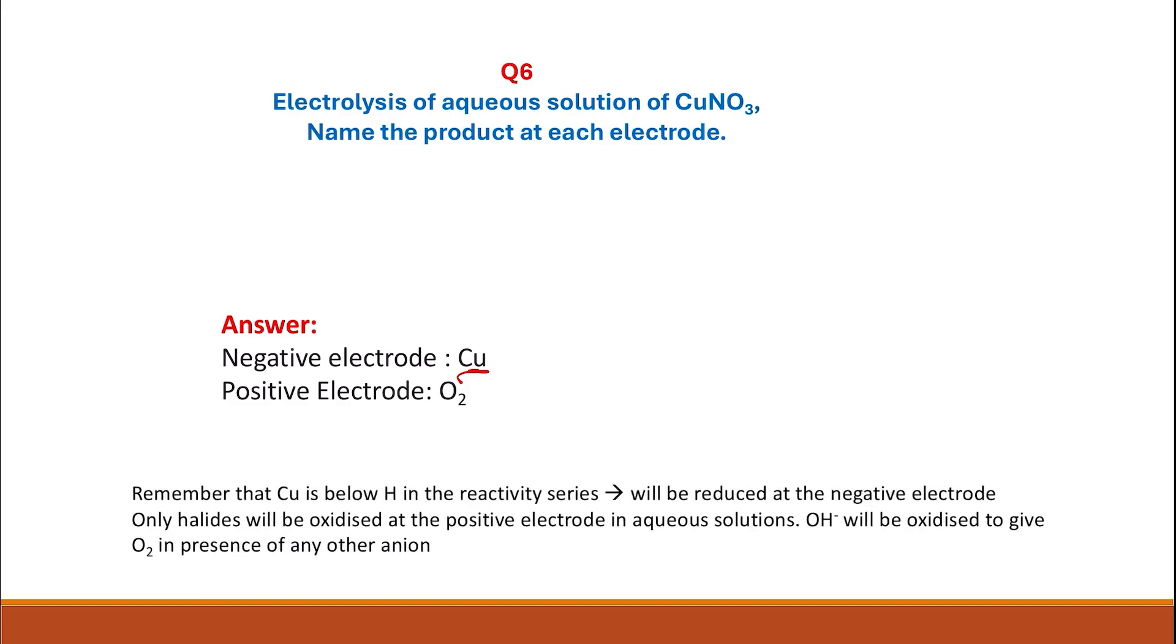Remember that copper is below hydrogen in the reactivity series, which means it's less reactive than hydrogen. For the competition at the negative electrode, copper will be the one that is reduced. For the positive electrode, only halides will be oxidized in aqueous solution. We don't have a halide here, we have nitrate as an anion. When there is a competition between the hydroxide ion from water and the nitrate, the hydroxide ion is the one that is going to be oxidized.